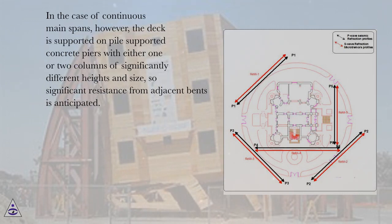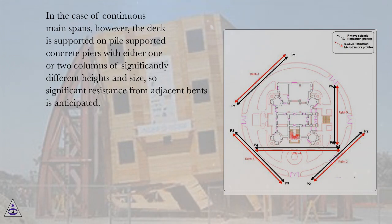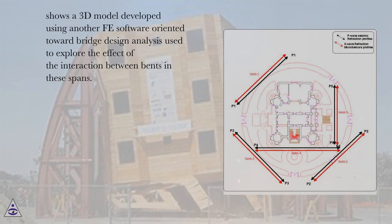In the case of continuous main spans, however, the deck is supported on pile-supported concrete piers with either one or two columns of significantly different heights and size, so significant resistance from adjacent bents is anticipated. A 3D model developed using bridge design analysis software was used to explore the effect of the interaction between bents and deck spans.